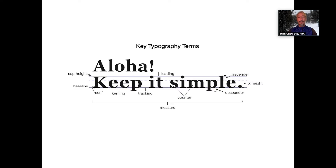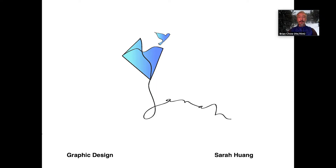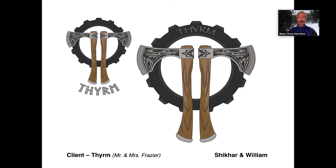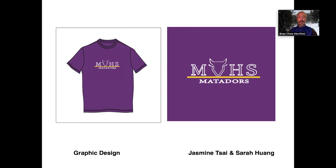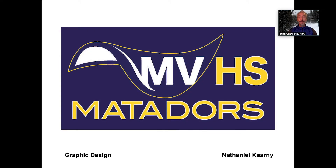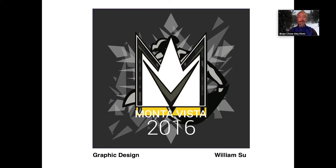Here are some examples of some of the graphic design work — pretty much intermediate to advanced level. This is an example of a personal logo, using typeface to create designs for clients, personal branding, as well as t-shirt designs. You might recognize this one from the athletic boosters that was on sale for a few years. Mood boards will be part of the pre-visualization for ideas such as business cards and personal branding. Here's another t-shirt example that was on sale for a number of years with athletic boosters. All these things were designed right here in this course.